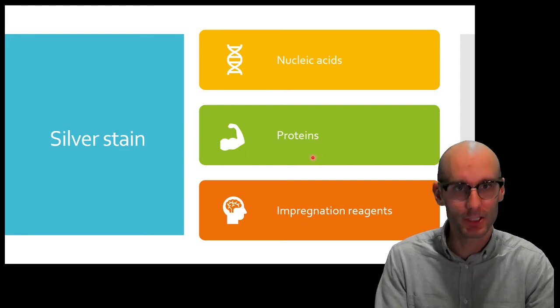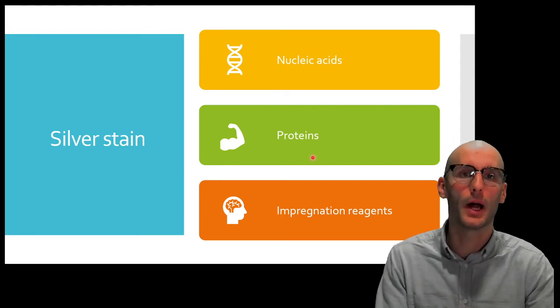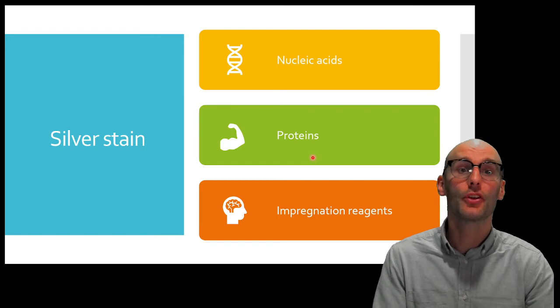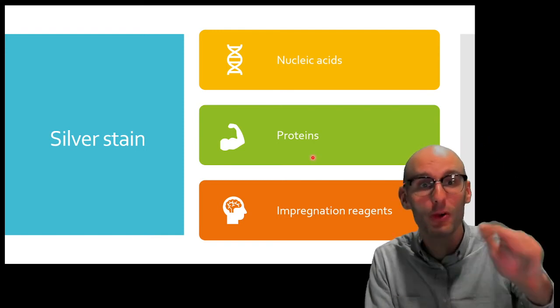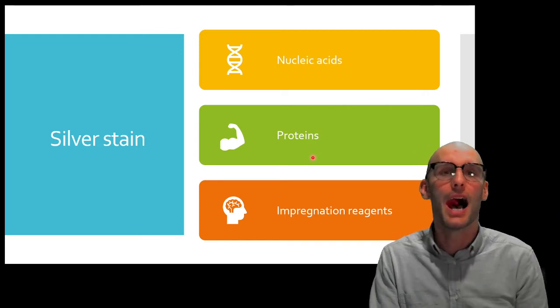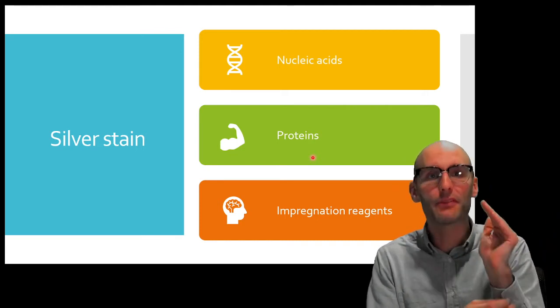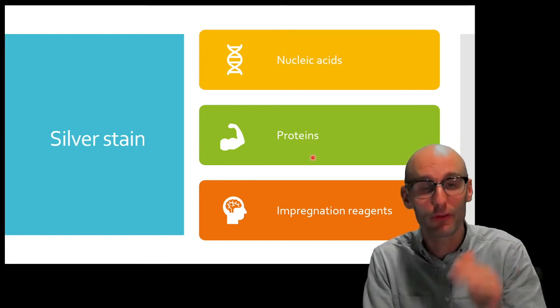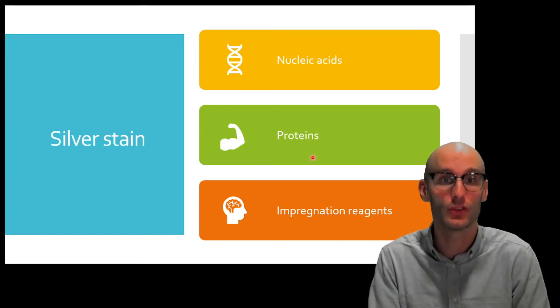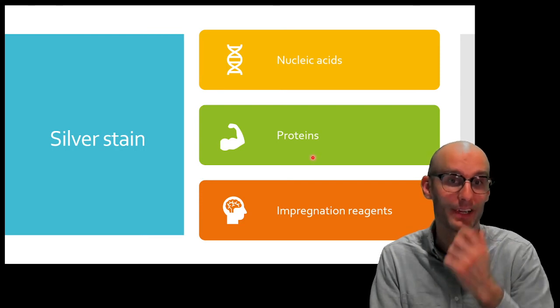So, now you've got a negatively charged chemical in one in a hundred neurons. So, then when you incubate with silver nitrate, the positive silver ion flows into the neuron as well. And flows into those negatively charged neurons preferentially, and stays in those neurons through wash cycles, preferentially in the negatively charged neurons that are full of this impregnation reagent.